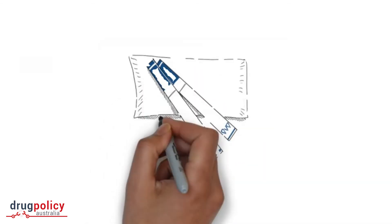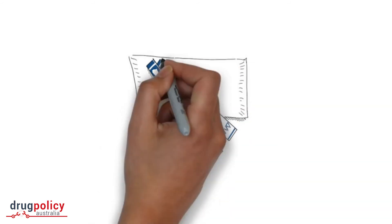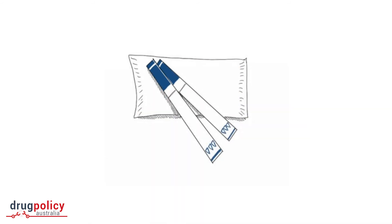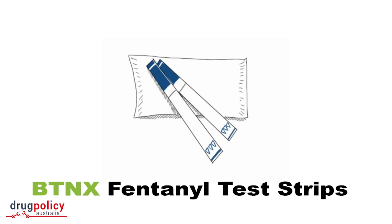How can I find out if fentanyl is in my drugs, you ask? Did you know that you can use urine test strips to see what's in your drugs? It's quite simple and no, you don't have to pee on them.